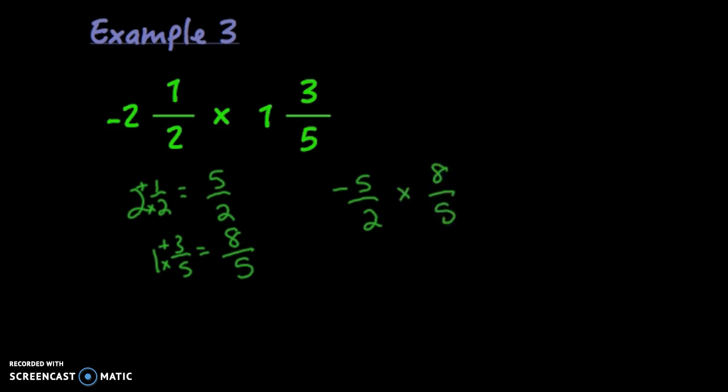So I'm going to actually be multiplying negative 5 halves times 8 fifths. And when I do this, I'm going to multiply straight across. Again, I'm going to look for common factors that I can reduce. Hey, negative 5 and 5, I can divide them both by 5. And we get negative 1 over 1. 8 and 2, they can both be divided by 2. So I get 4 and 1. And when I multiply straight across in this case, I have negative 1 times 4 is negative 4. 1 times 1 is 1. And negative 4 over 1 just equals negative 4. So that's my final answer.